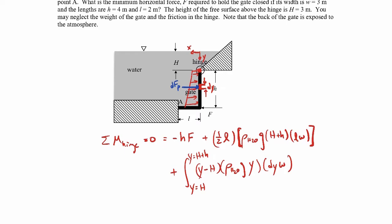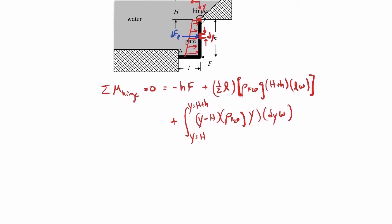To review: the moment arm is Y minus H, which is the distance from the hinge out to the differential force element. The pressure at that point is rho g Y, the depth to that element. The area of that little piece of the gate is dy times W, the width in and out of the page. We integrate from Y equals capital H, where the hinge is, to capital H plus little h at the bottom.